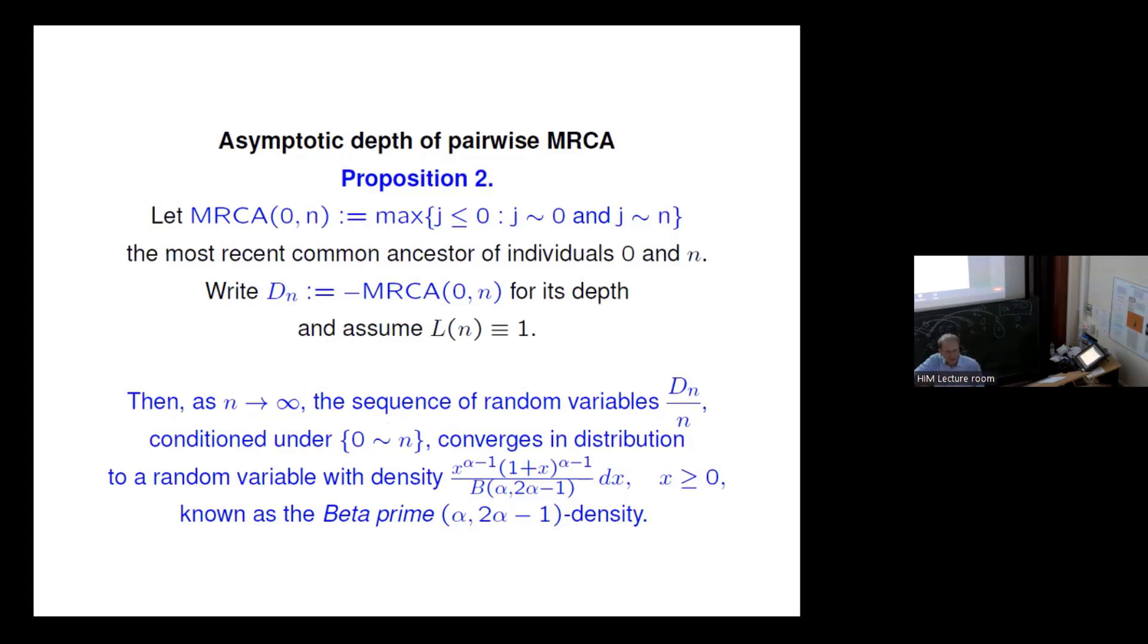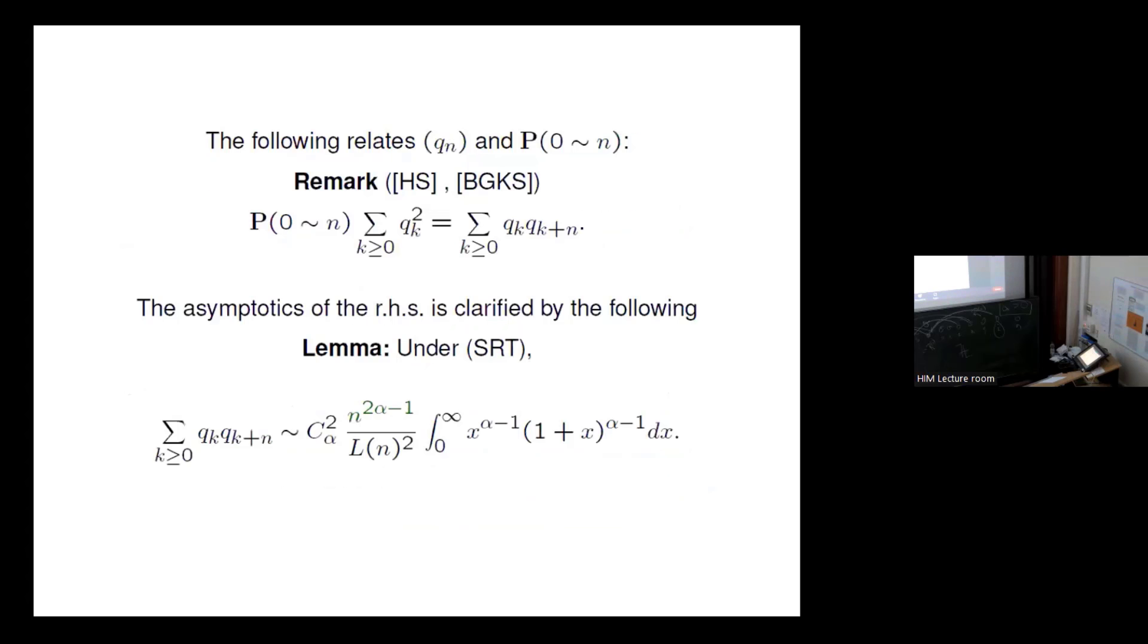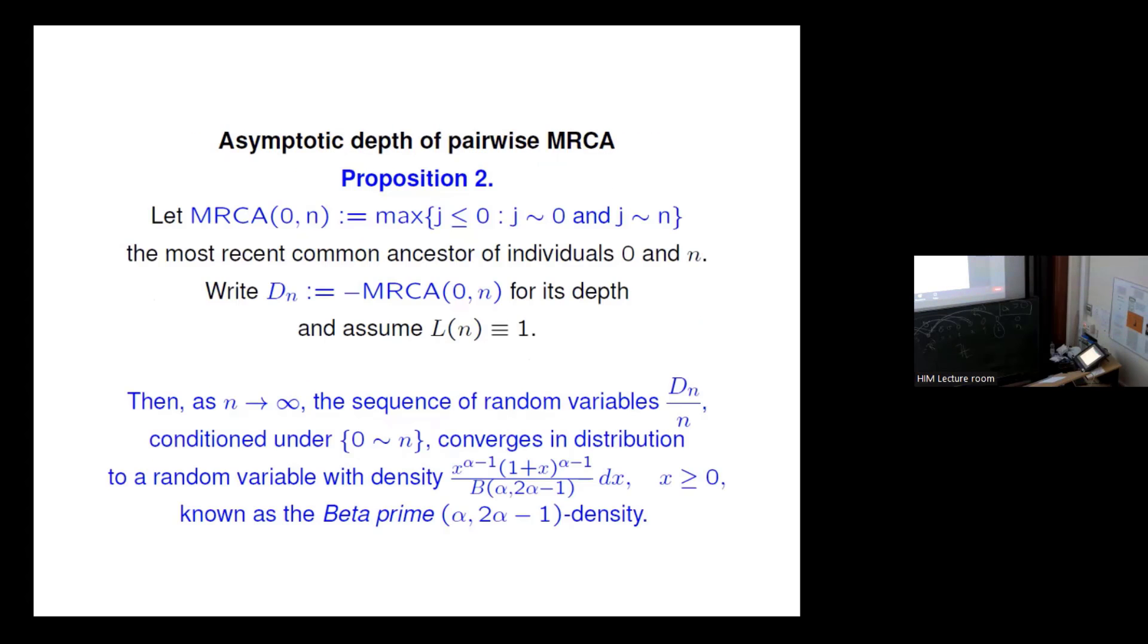Now the asymptotic depth of the pairwise MRCA, that is now something different, not the probability that they are related but where do they find each other, where does the MRCA sit. So that's the MRCA depth, and this we say is the D_n. And assume now for simplicity that L_n equals one, otherwise some other terms would pop up involving the L.